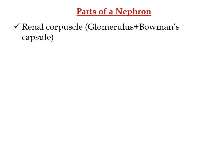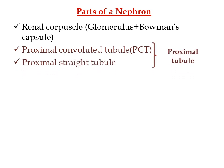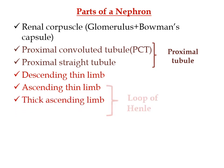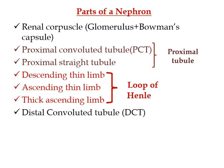The parts of the nephron include: the renal corpuscle (glomerulus and Bowman's capsule together), the proximal tubule (proximal convoluted tubule and proximal straight tubule), the loop of Henle (descending thin limb, ascending thin limb, and thick ascending limb), the distal convoluted tubule, and finally the collecting duct.